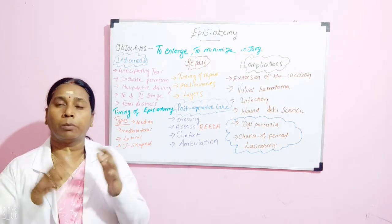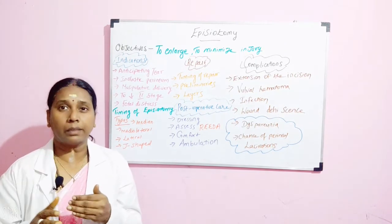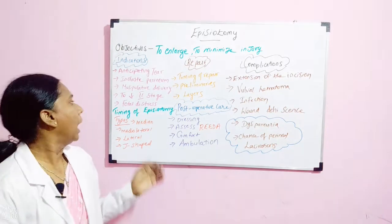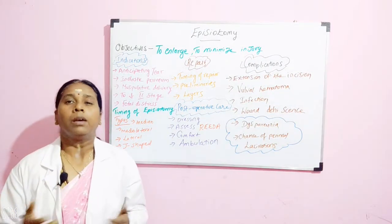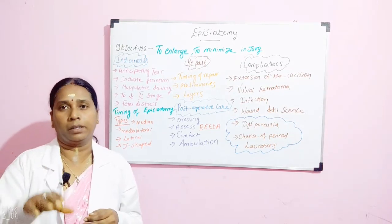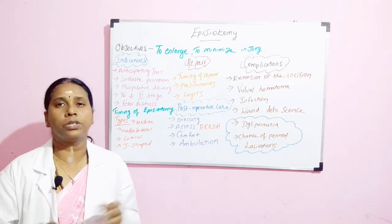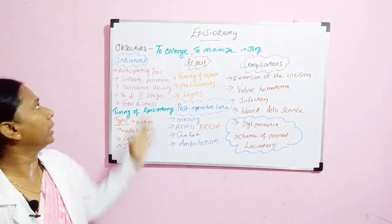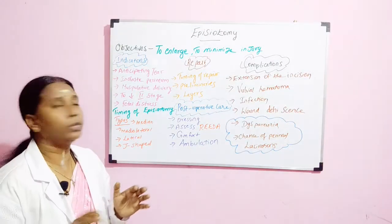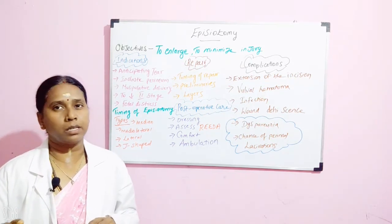Episiotomy is also used to decrease or fasten the second stage of labor — for example in twin pregnancies or polyhydramnios — and in cases of fetal distress, where the fetal heart rate is dropping and you need to prevent asphyxia. So the indications are: anticipating tears, inelastic perineum, manipulative delivery, shortening the second stage, and fetal distress.